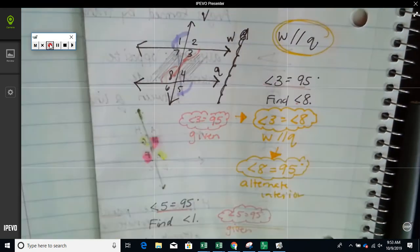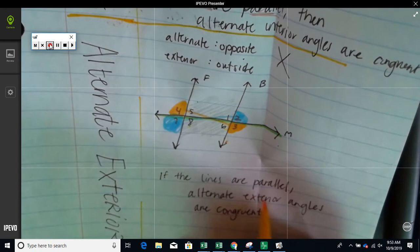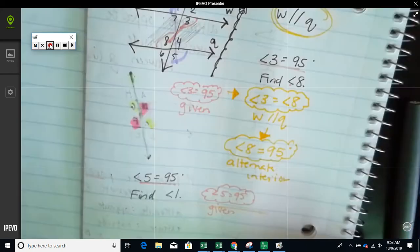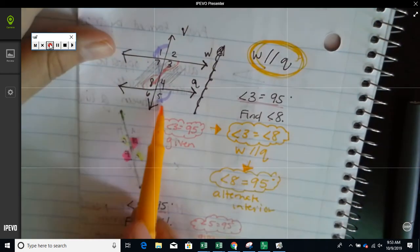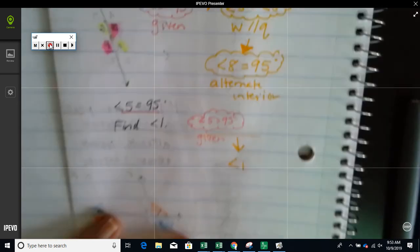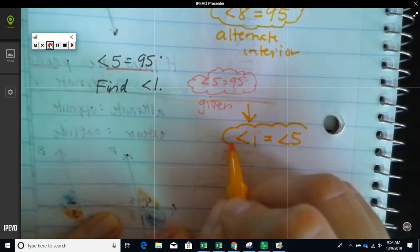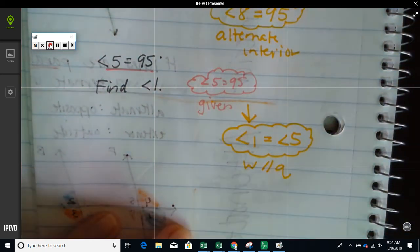Now, we said if the lines are parallel, then they would be congruent. That's what we wrote on page 21, right before we did 22. So, because it tells me right there, the lines are parallel, that means angle 5 and angle 1 are congruent. Angle 1 is equal to angle 5. Why? Because the lines are parallel.